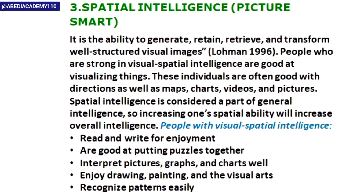The third type is spatial intelligence — picture smart. With this intelligence, you are able to generate, retain, retrieve, and transform well-structured visual images, meaning you can remember images very strongly and visualize and imagine things. You are very good at making maps, charts, videos, and pictures. This is sometimes called general intelligence because it is common among people, but some have it very strongly. They read and write for enjoyment, can put together puzzle pieces, interpret graphs and charts, enjoy drawing, painting, and visual arts, and recognize patterns very easily.